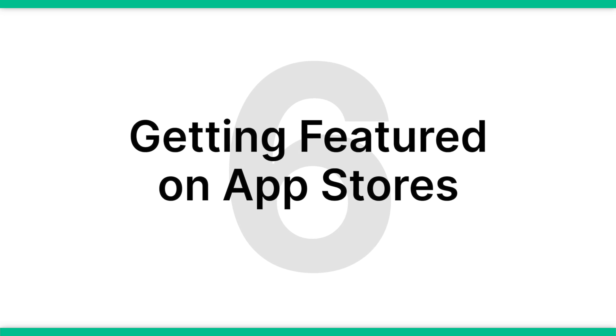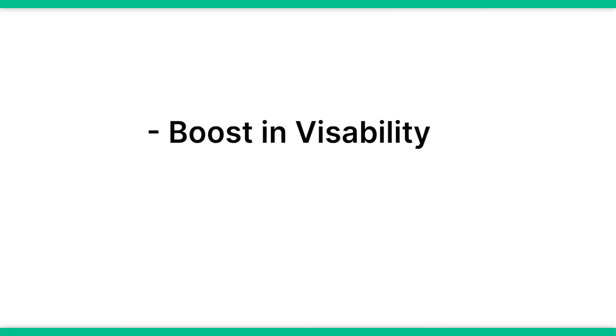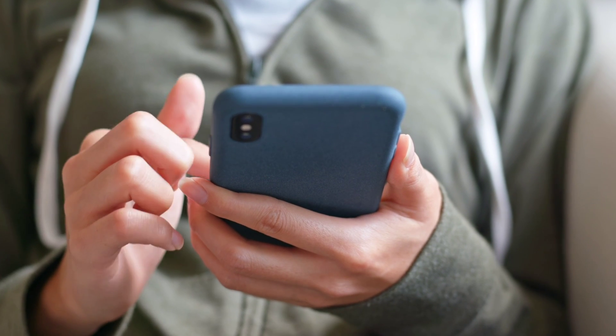Another thing that can get your app seen is getting featured on App Stores. The pinnacle of App Store optimization is if you're able to get your app in the App Store or Google Play Store's featured or top sections. This gives you a huge boost in visibility and downloads as well as social proof. While there isn't a 100% way to get your app featured, you can follow some best practices to increase your chances — primarily, creating a great app that users love, with extra points if your app does something innovative and unique.